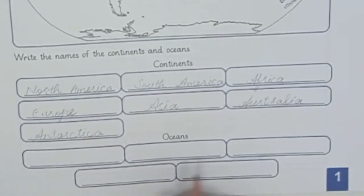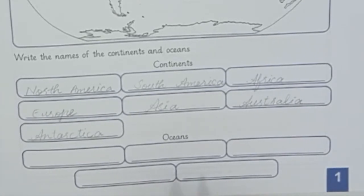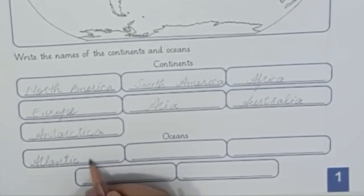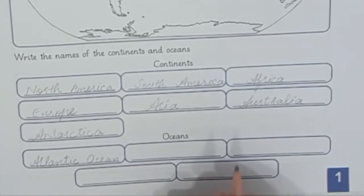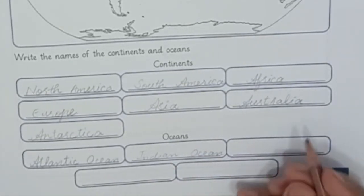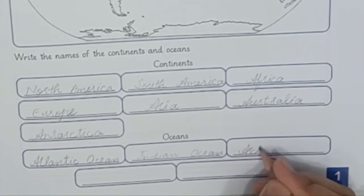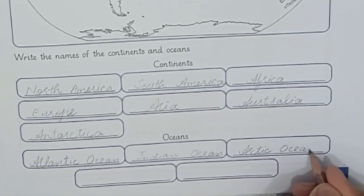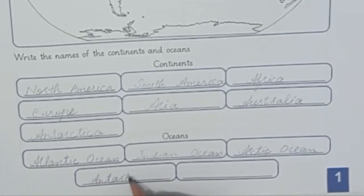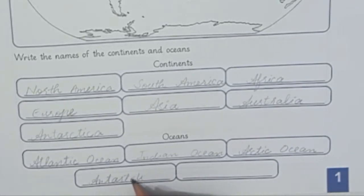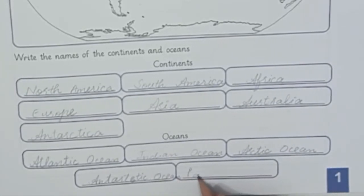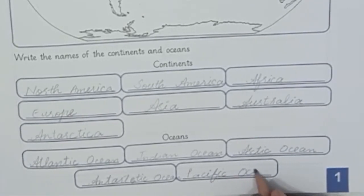Now, oceans. How many oceans are there? Five oceans. Number 1 is Atlantic Ocean. Number 2 is Indian Ocean. Number 3 is Arctic Ocean. Number 4 is Antarctic Ocean. Number 5 is Pacific Ocean. Here we have our 5 oceans and 7 continents.